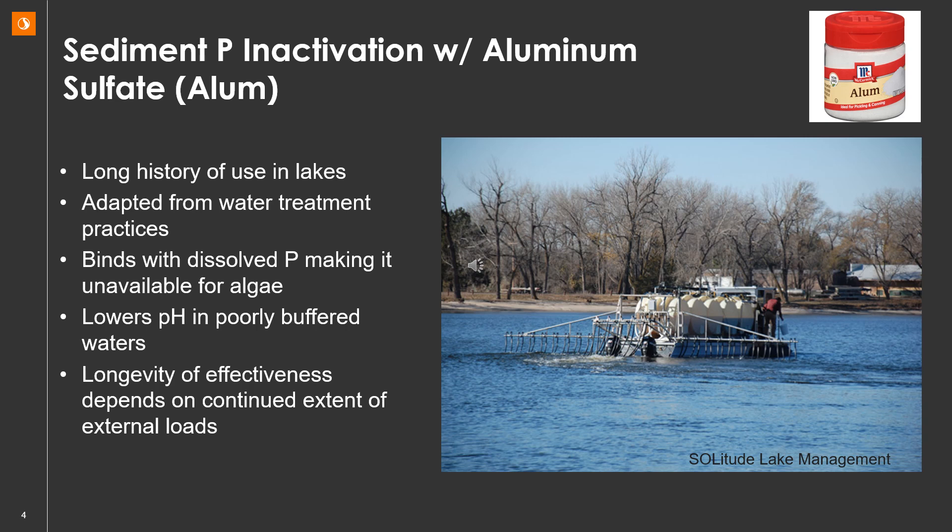Alum is applied by a barge on the lake that has reservoirs and tanks, and it is injected through hoses just below the surface of the water in dissolved form. It binds with dissolved phosphorus, making it unavailable for algae. The alum floc settles to the surficial sediments where it integrates and is available to capture phosphorus diffusing from beneath. It can lower pH in poorly buffered or soft waters, so sometimes a buffer is applied with it to mitigate pH swings. The longevity of an alum application really depends on the continued extent of the external loads.